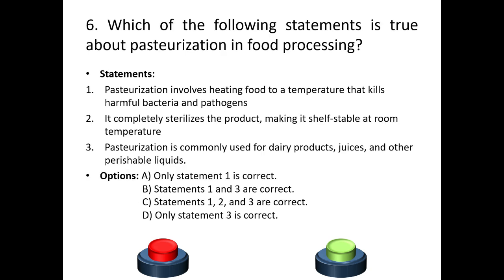Sixth question: which of the following statements is true about pasteurization in food processing? Statement one: Pasteurization involves heating food to a temperature that kills harmful bacteria. Statement two: It completely sterilizes the product making it shelf stable at room temperature. Statement three: Pasteurization is commonly used for dairy products, juices and other perishable liquids.